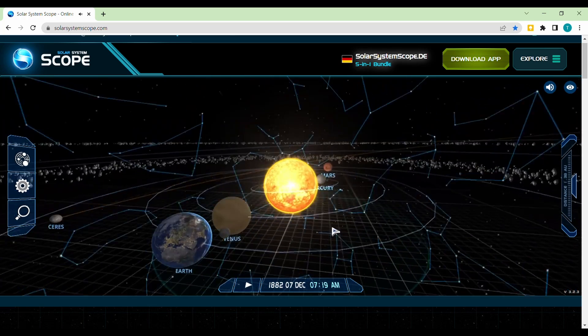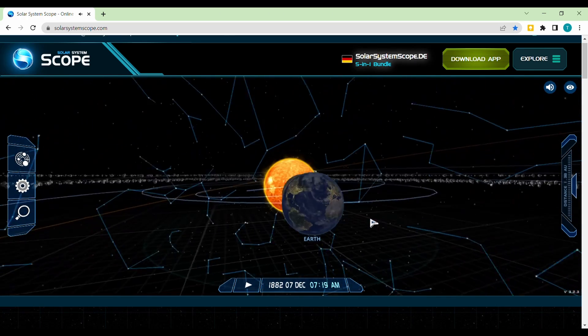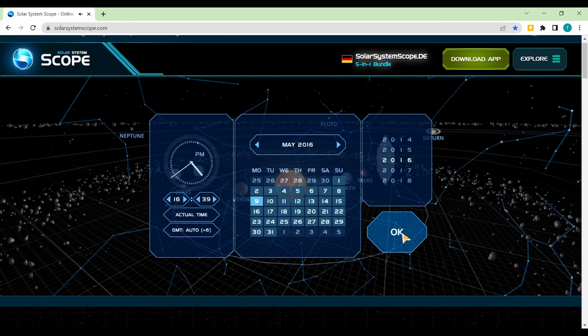With the help of an online model, you can view past as well as future transits of Mercury as well as Venus.